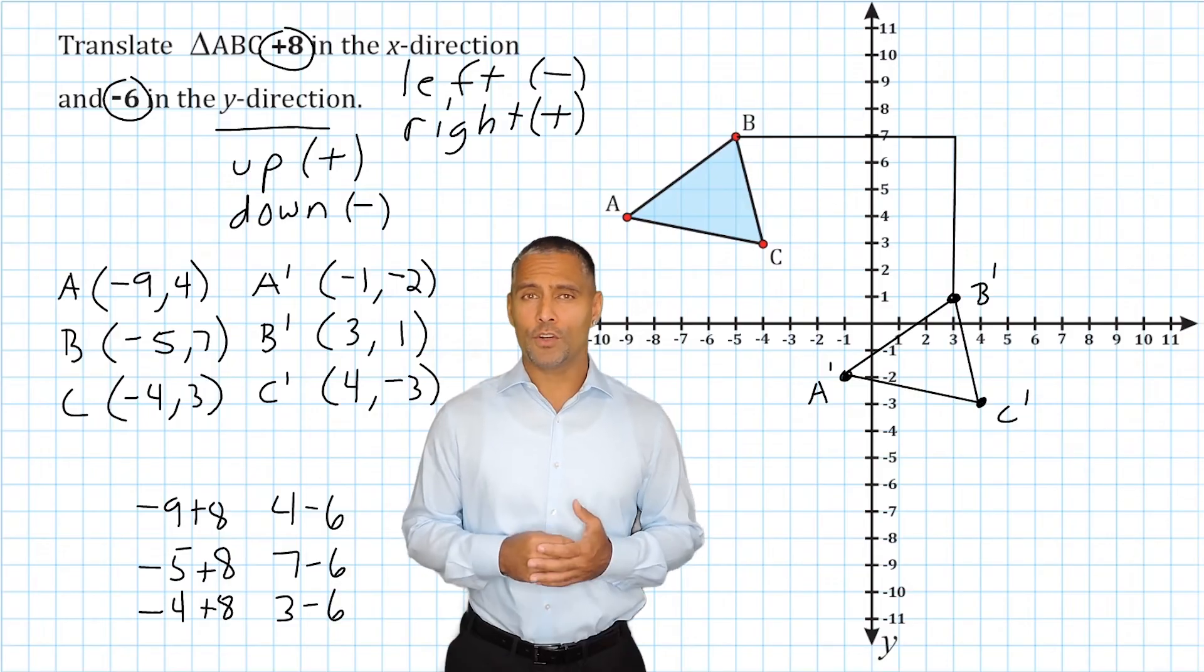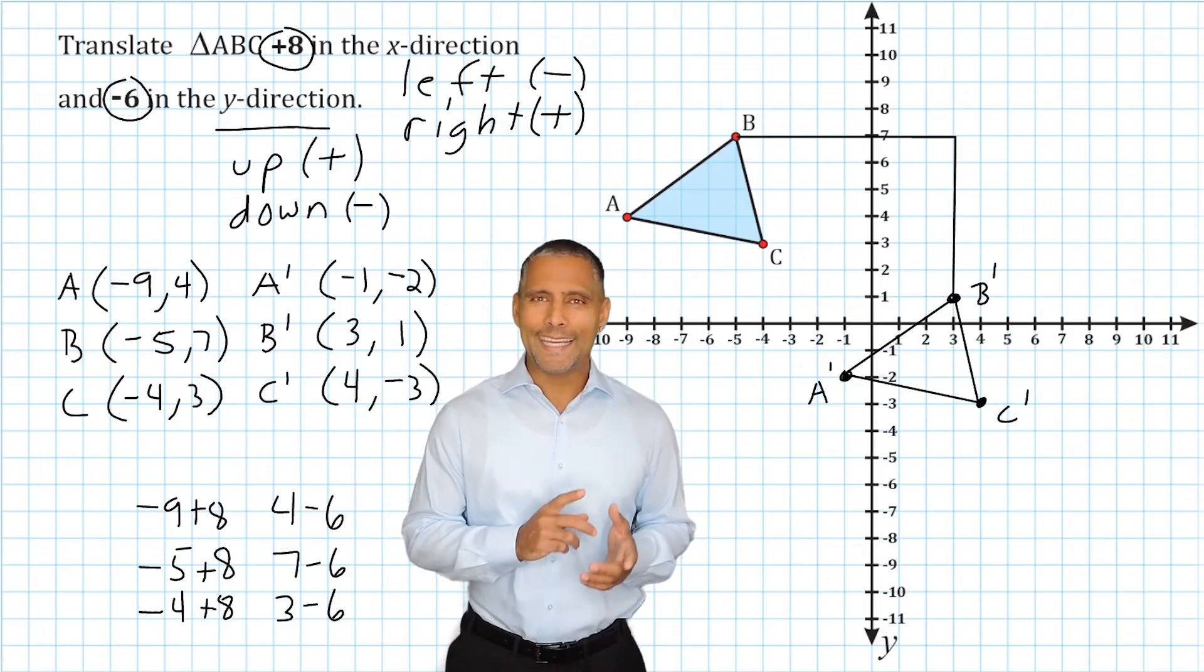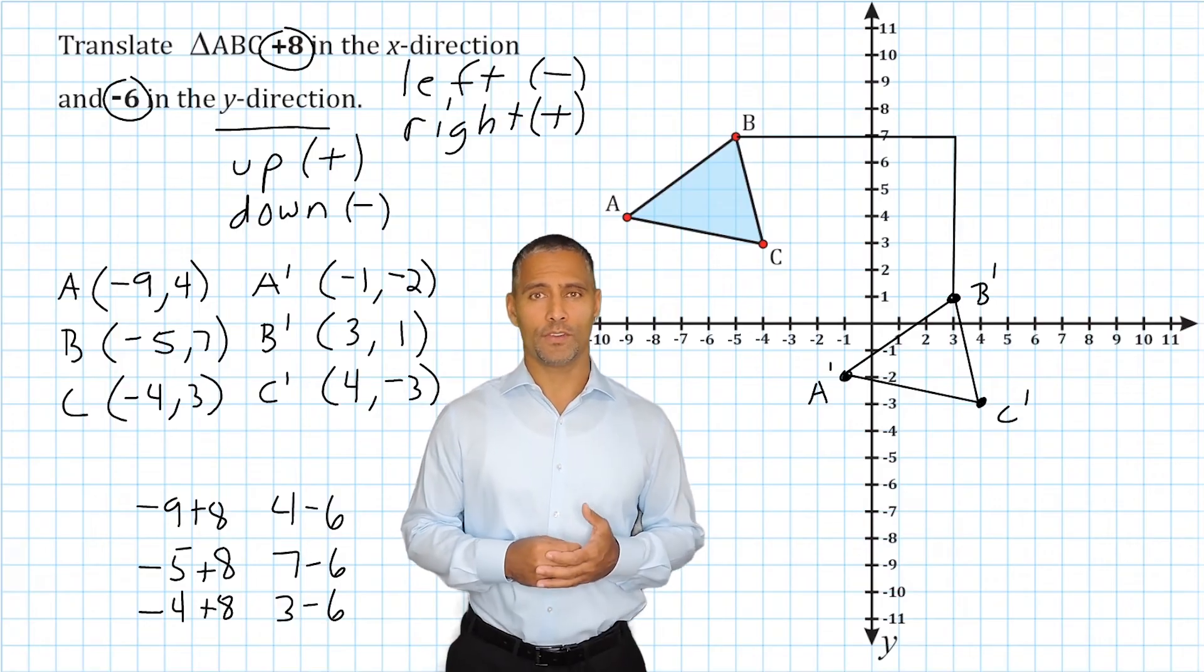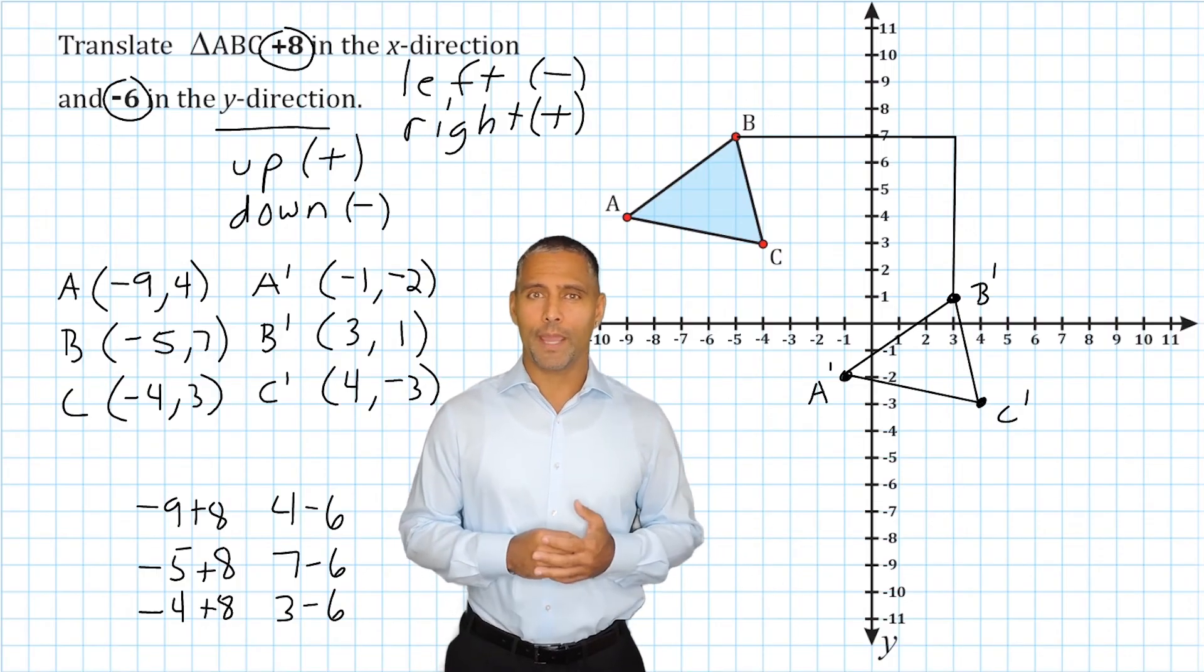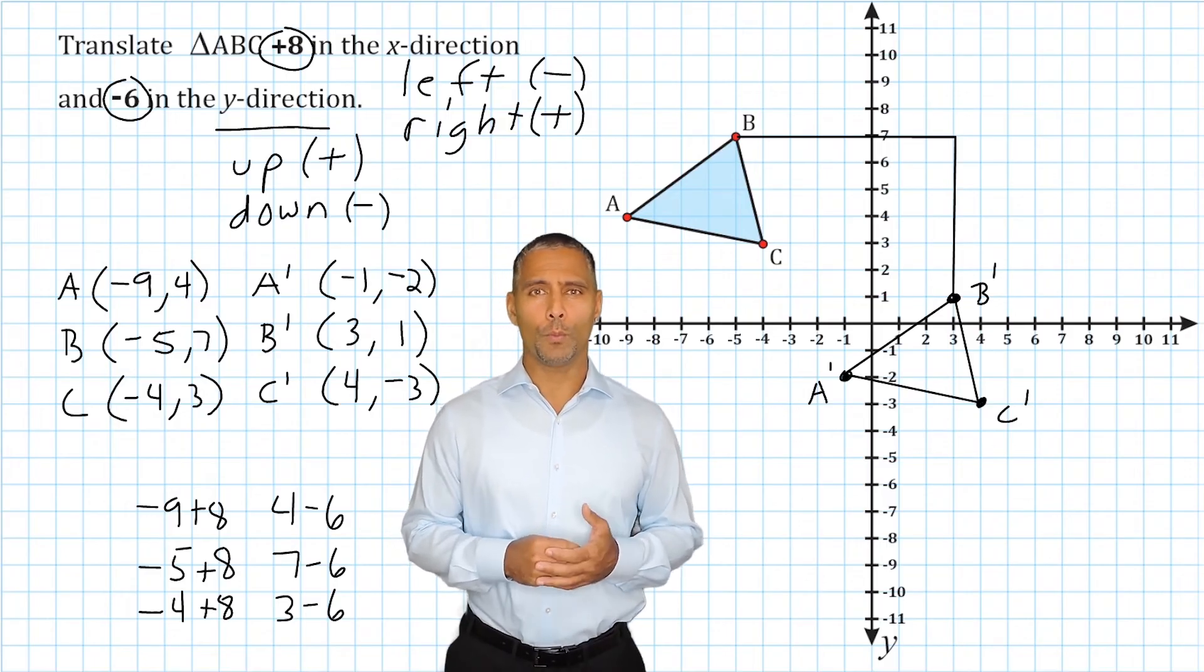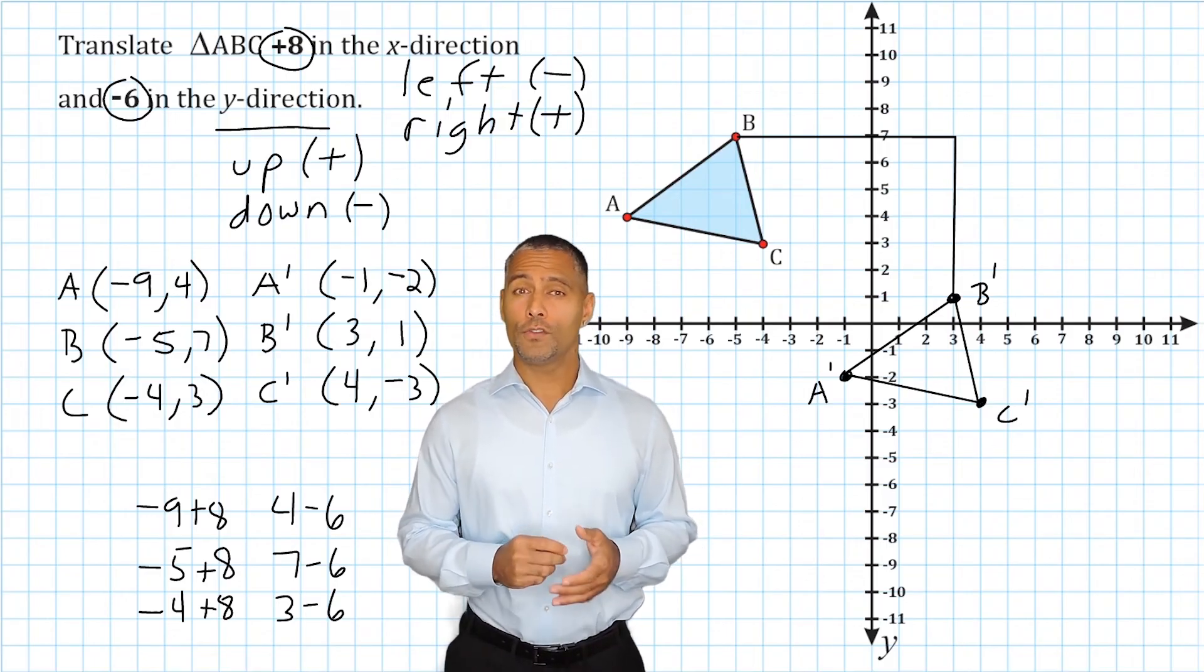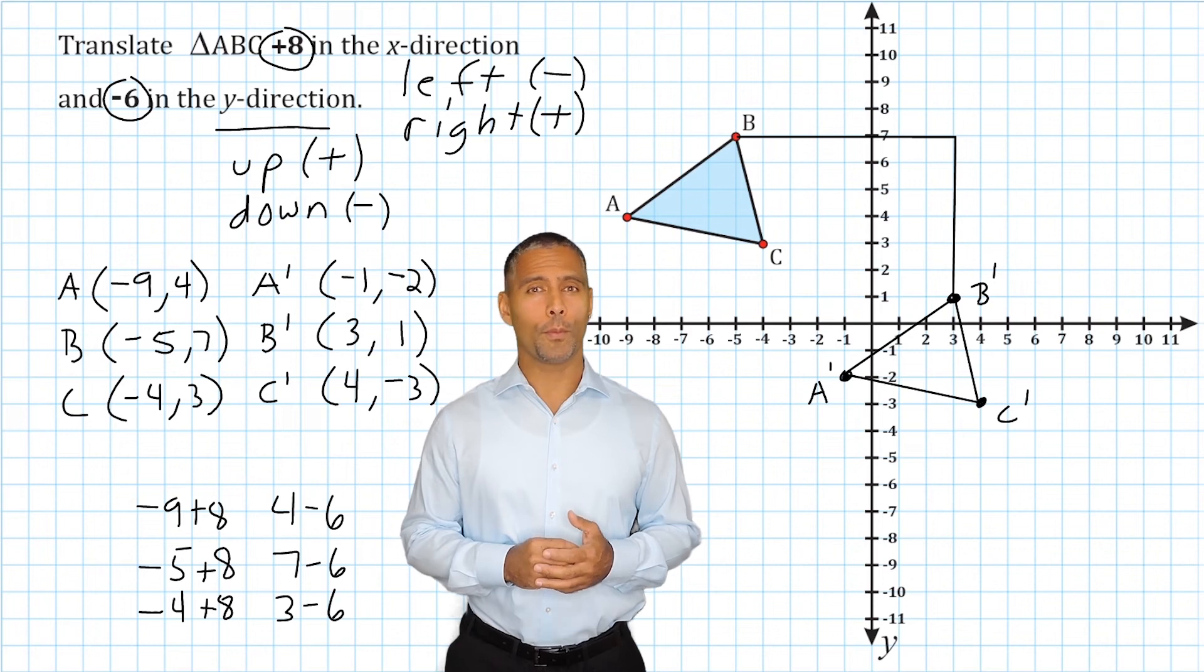Now, an easier way that we could have done this was by taking each original point and moving 8 units to the right and then 6 units down and then making a new point. However, your teacher may ask you to figure out where the new point would be without using a graph, so it is important that you can perform a translation with a graph and without a graph.